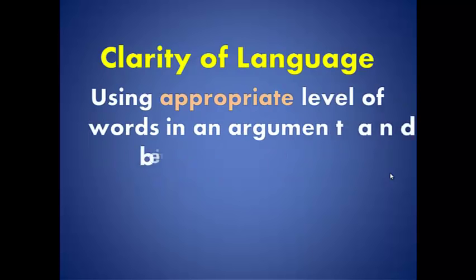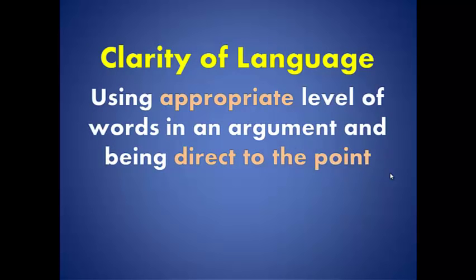Clarity of language means using an appropriate level of words in an argument and being direct to the point. There are two elements: appropriate level of words and being direct to the point. Appropriate level of words refers to knowing your audience — if the audience is a five-year-old kid, your choice of words should suit their level of understanding. If you are talking with university graduates, you might use slightly more difficult words. The second element is being direct to the point: you don't go around the bush, you just deliver what you intend to say.